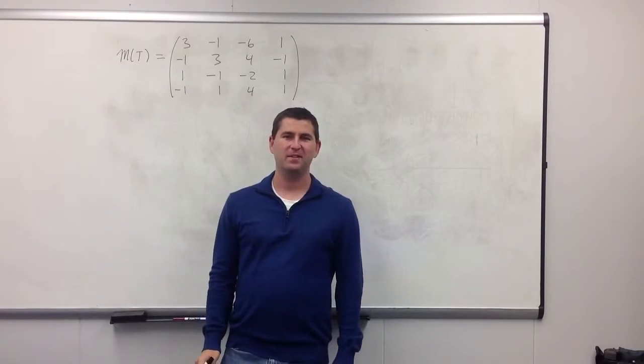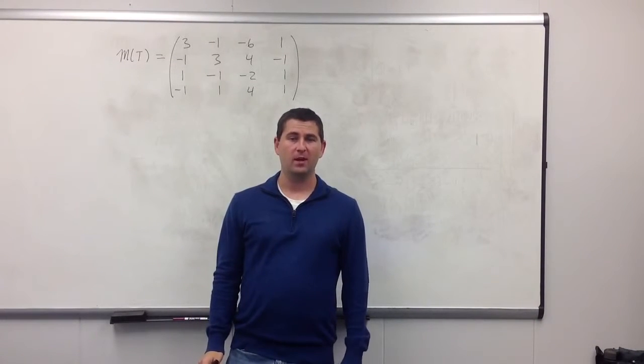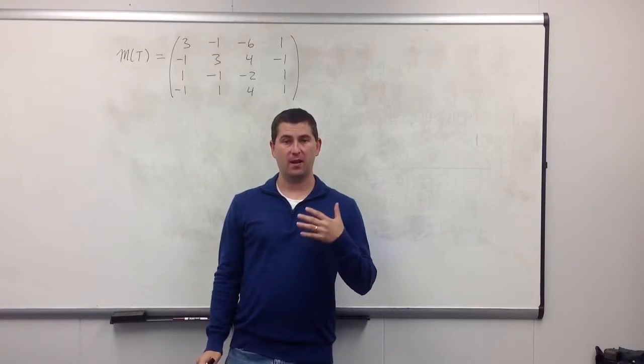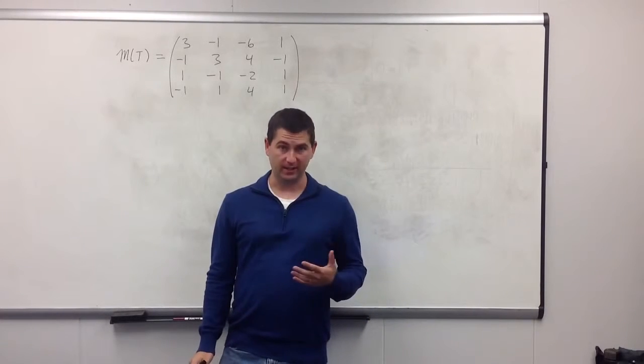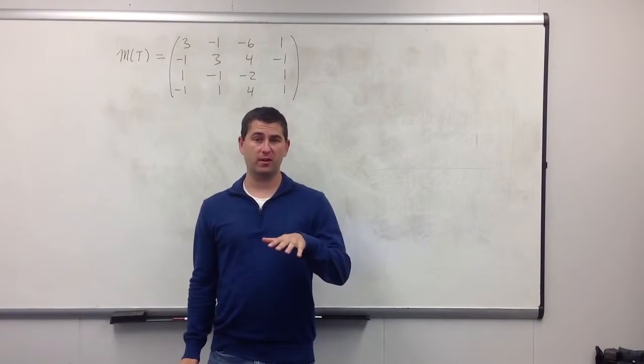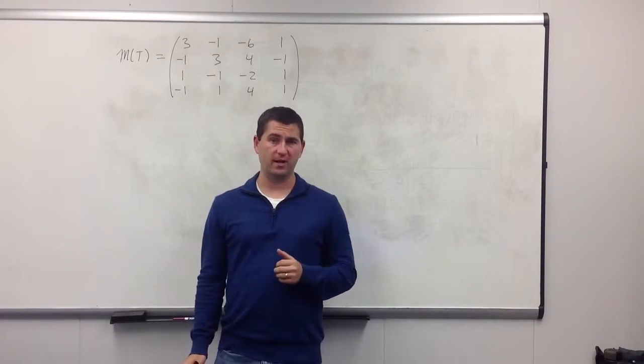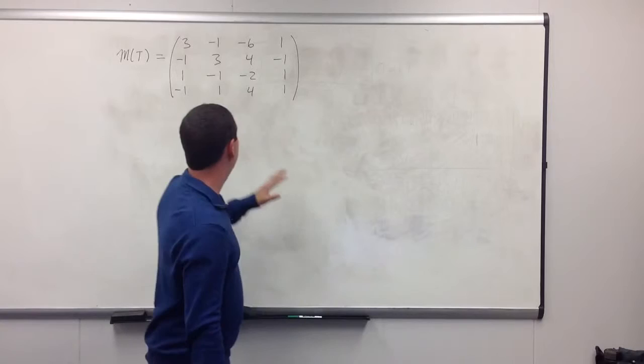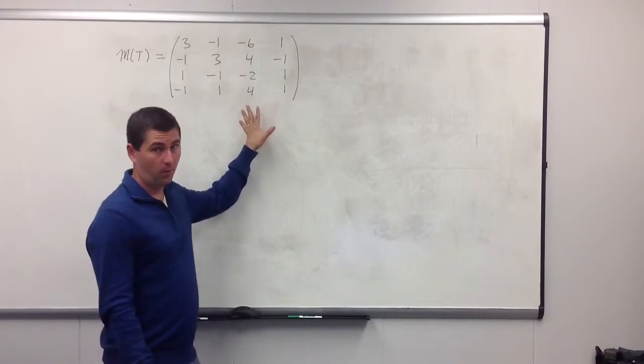Hi again, everybody. This is the third video giving examples of how to take a matrix and upper triangulate it. That is, choose a new basis for your vector space such that the matrix is going to be in an upper triangular form. This time, we have a 4x4.